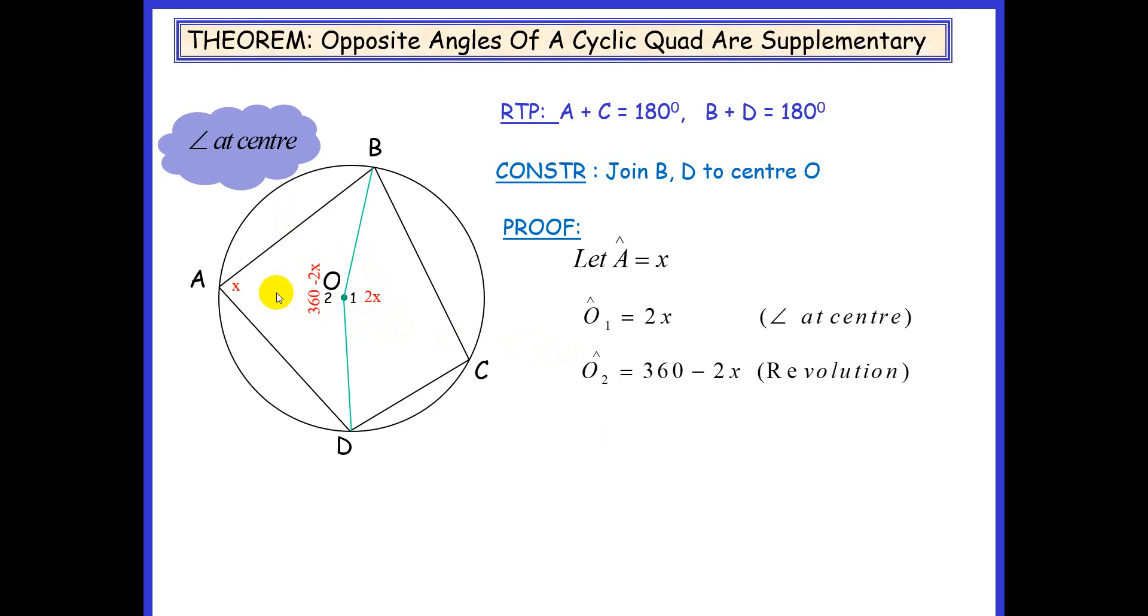Now we want to prove that A plus C equals 180, so we need to get to C. We're going to find C by stating that C is half of 360 minus 2x. Angle at the center equals twice the angle at the circumference. So if this is 360 minus 2x, we divide that by 2 to get 180 minus x.